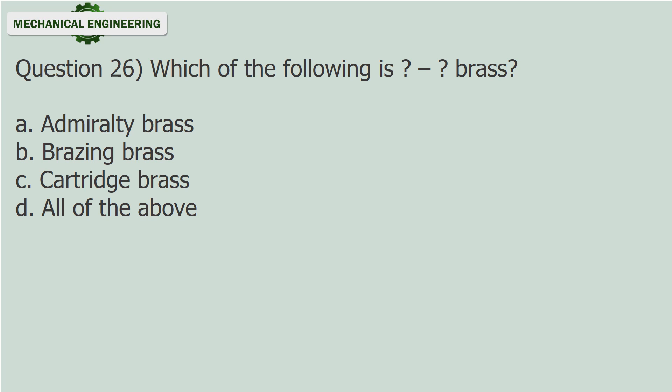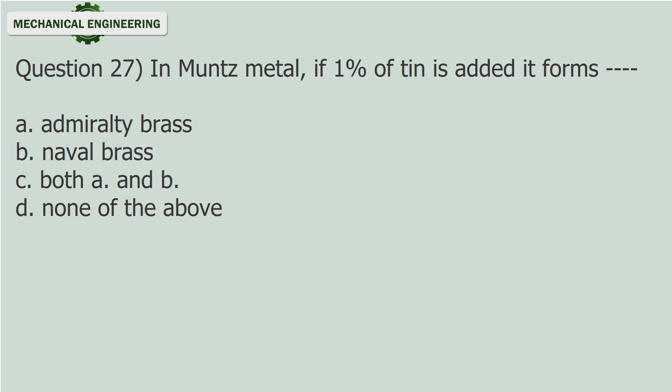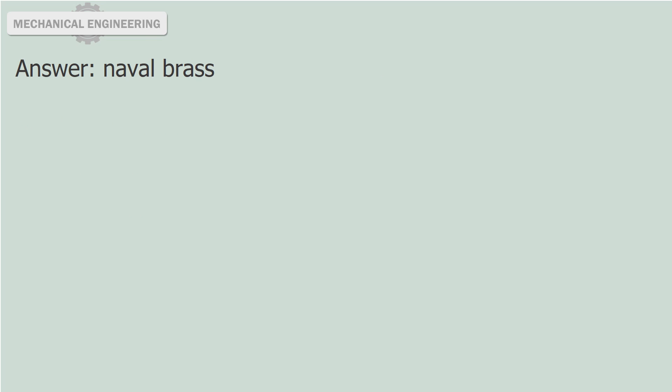Question 27: If 1% of tin is added to brass, it forms — (fill in the blank). A. Admiralty brass. B. Naval brass. C. Both A and B. D. None of the above. Answer: Naval brass.